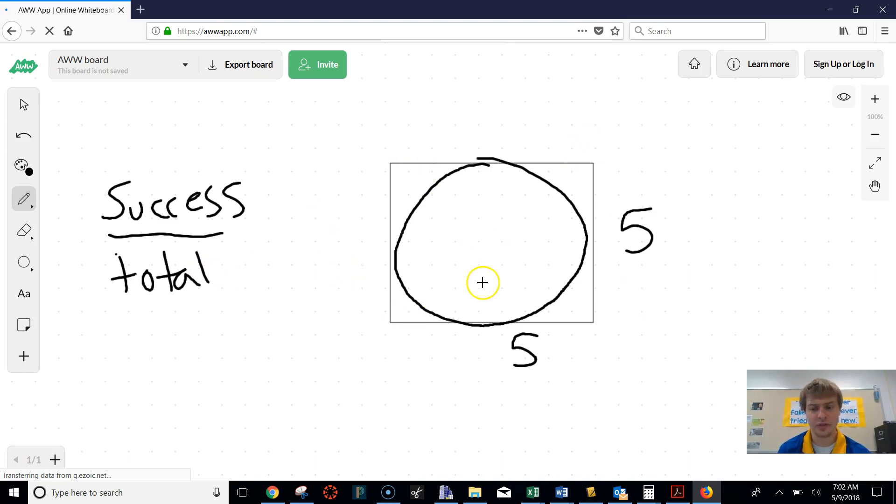So the first thing we're going to do is we're going to find the area of this square. So the area of this square, or the total, would be, well, you do length times width to find the area of a square. So that would be 5 times 5. So our total area is 25.